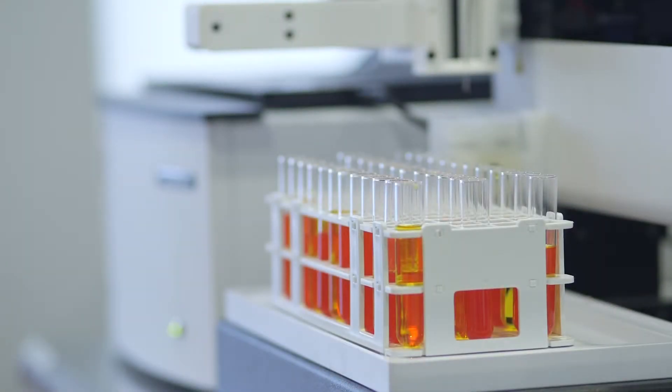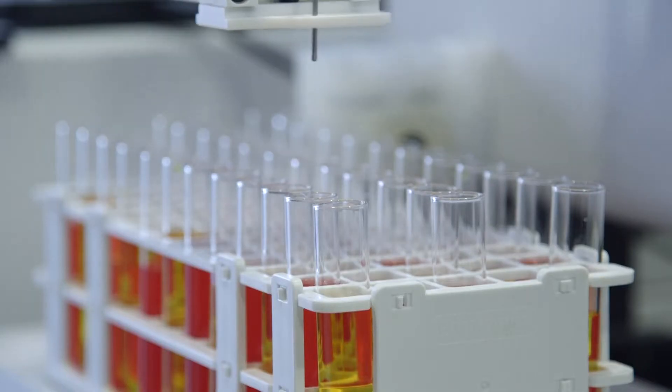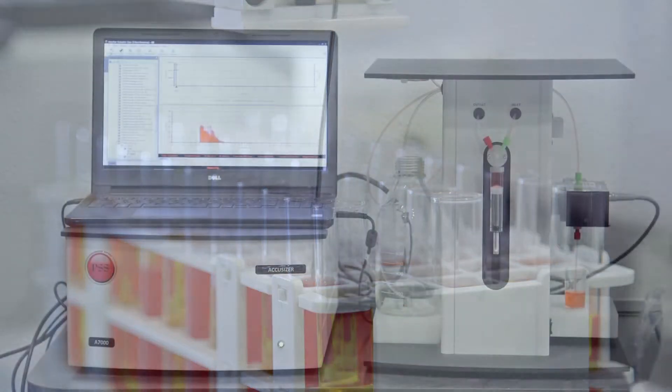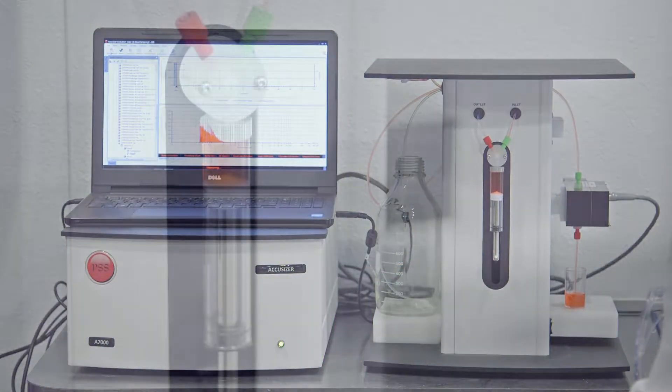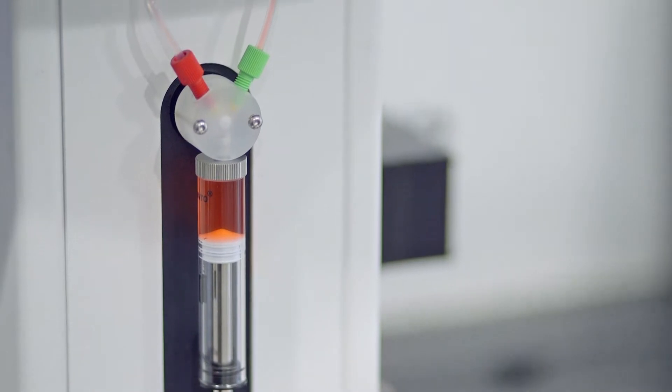Transporting the sample through the sensor is accomplished in the lab with the use of an automated sampler. The AccuSizer SIS aspirates low-volume samples through the sensor without dilution.